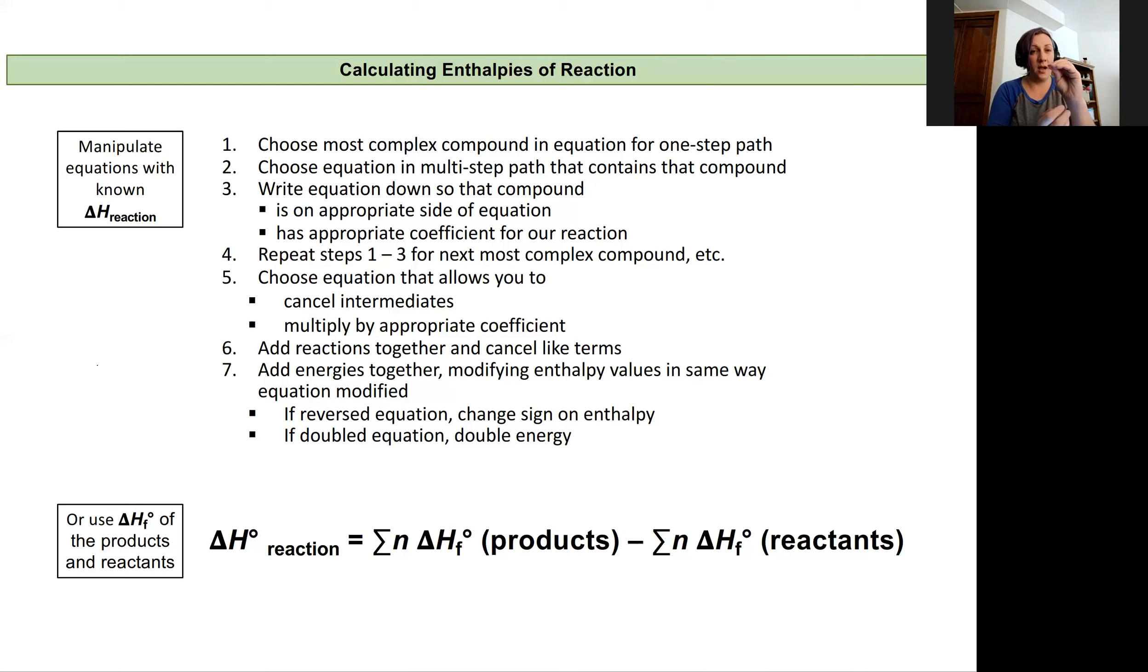For each product, if it has a coefficient that isn't one, we multiply that enthalpy of formation by the coefficient. So we take that sum for the products, and we subtract the sum of those enthalpies of formation for the reactants. Again, multiplied by the coefficient in the balanced chemical reaction.